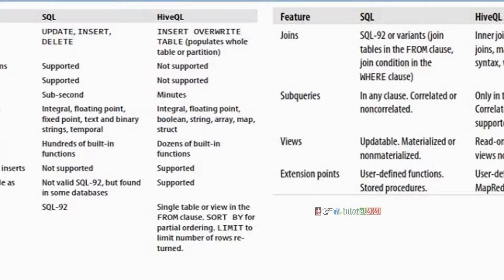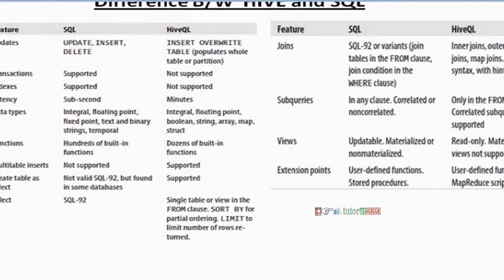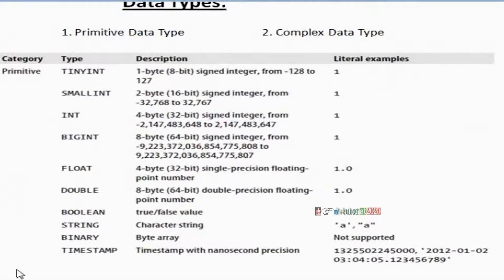Equi-joins mean the left side is equal to the right side — that condition is called an equi-join. Non-equi joins mean conditions like greater than or less than or not equal — where left side is not equal to right side. Hive supports equi-joins only, not non-equi joins. There are other differences as well in the documentation.